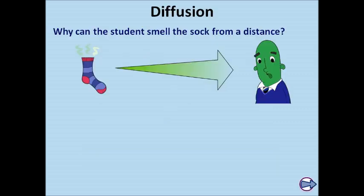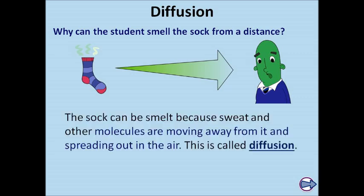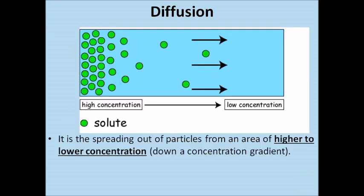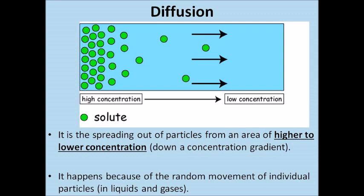The best way to think about diffusion is to think about why you can smell something from across a room. Why can the student smell the sock from a distance? The sock can be smelt because sweat and other molecules are moving away from it and spreading out into the air, which is called diffusion. This diagram shows what diffusion is like — it's the spreading out of particles from an area of higher to lower concentration, down its concentration gradient, and it happens because of the random movement of particles in liquids and gases.